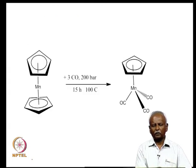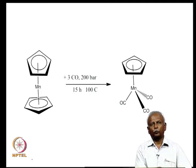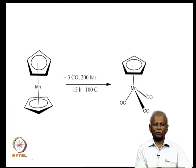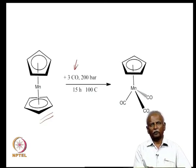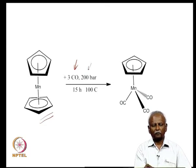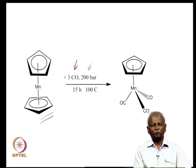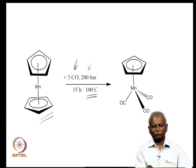As I told you earlier, it is possible to generate half sandwich complexes in a variety of ways. One of them is to treat a sandwich complex which is not an 18-electron species — in this case, if you react with carbon monoxide at high pressure — 200 bar, which is 200 times atmospheric pressure — you treat manganocene with carbon monoxide at high temperature and high pressure. What you end up with is a molecule called cymantrine.